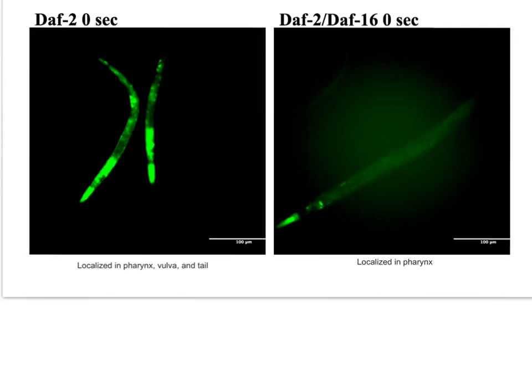SOD3 activity was significantly more expressed in DAF2 compared to the DAF2-DAF16 mutants. Additionally, DAF2-DAF16 SOD3 activity was localized in the pharynx, while in the DAF2 mutants it was spread out through the pharynx, vulva and tail.